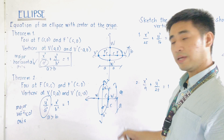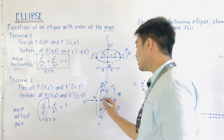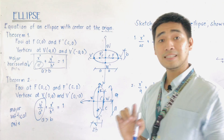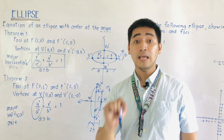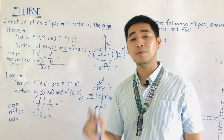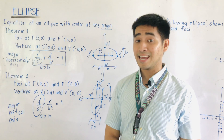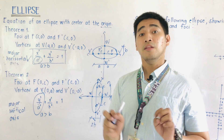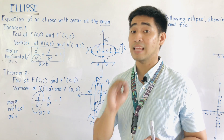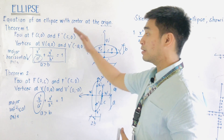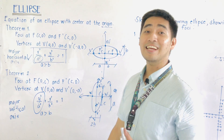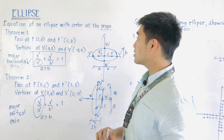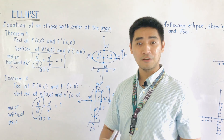The length of the major axis is 2A, and the length of the minor axis is 2B. When asked about the semi-major axis, its length is A; when asked about the semi-minor axis, its length is B — because the word 'semi' means half. We're now discussing Theorems 1 and 2 of the equation of the ellipse with center at the origin.